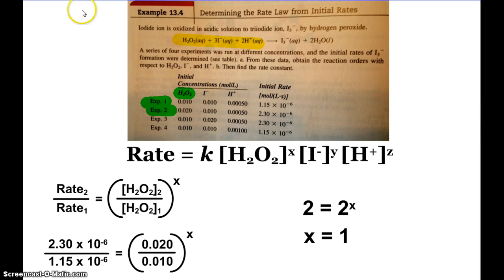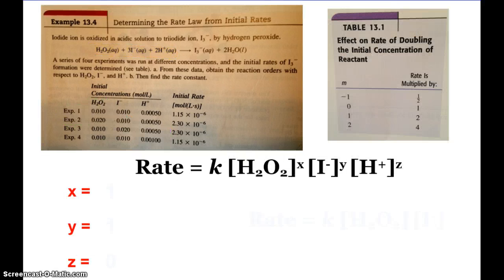I can do that to find Y and Z because if I look at my experiments, if I compare experiment two and three I can find Y, and if I compare experiments three and four I could find Z. Or I could use that little shortcut that I was talking about. Typically when we do these, we always try and double the concentrations. If I look at my experimental data, from experiment one to experiment two I doubled the concentration of hydrogen peroxide. The rate also doubled. So if the rate doubles, then the exponent is 1.